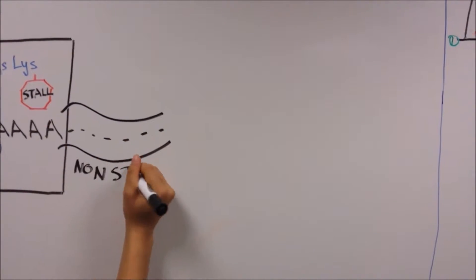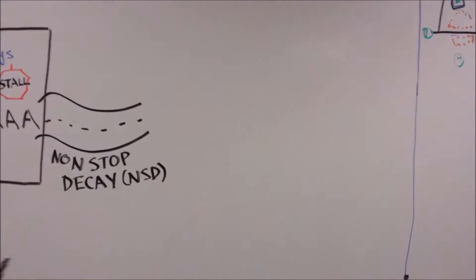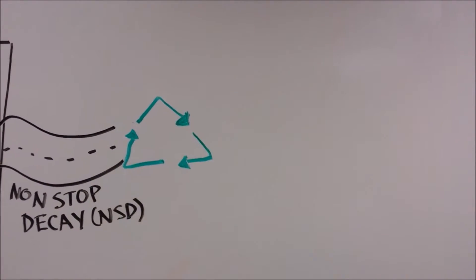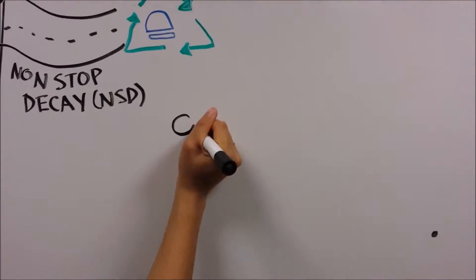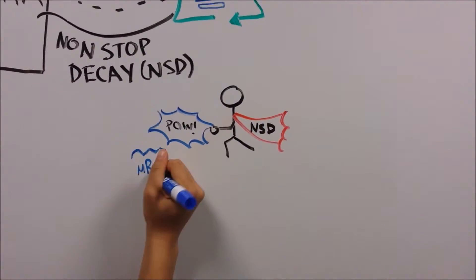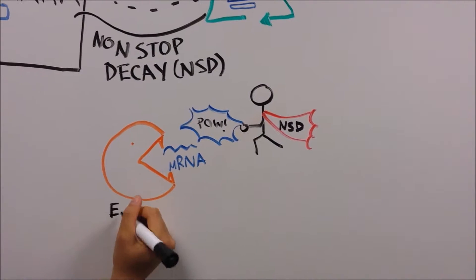A molecular pathway called the non-stop mRNA decay pathway has evolved to release and recycle these stalled ribosomes. While this rescues the ribosome, it does so at the expense of the mRNA, which is degraded by the exosome complex.